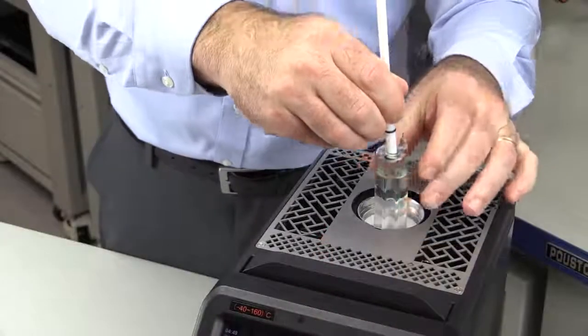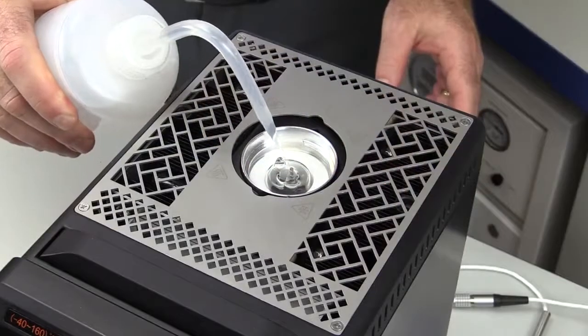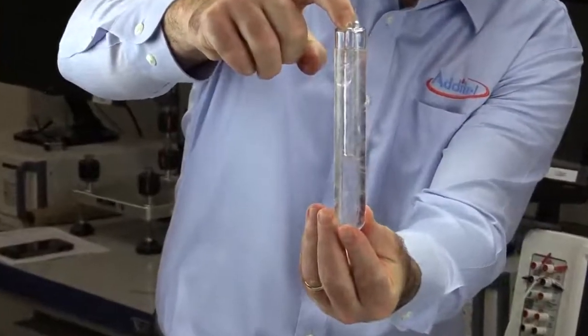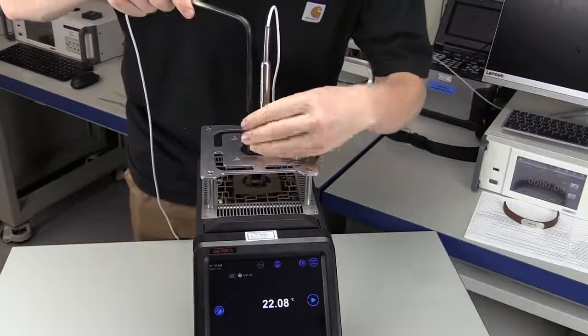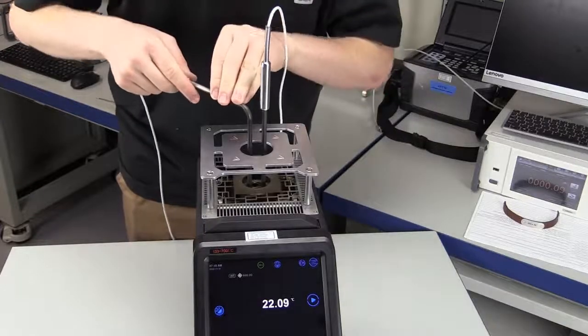The ADT878 reference drywells have unmatched flexibility with features like the one touch triple point of water realization and maintenance feature found in the 878-160 and the very easy to use annealing feature found in the ADT878-700.